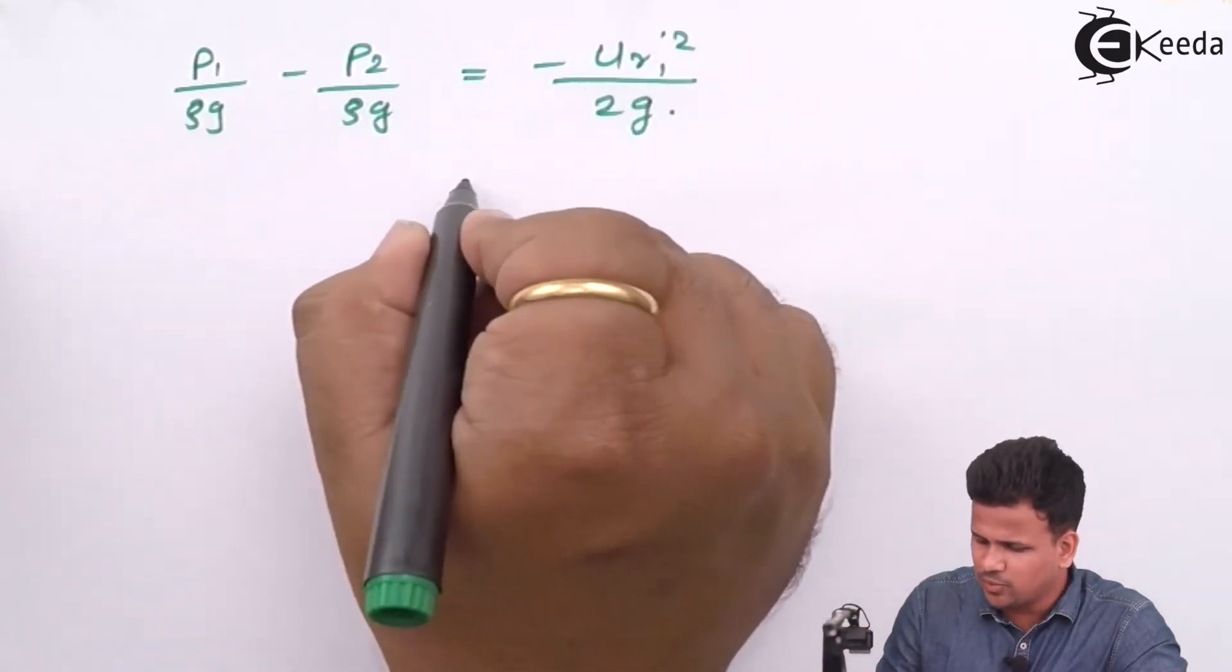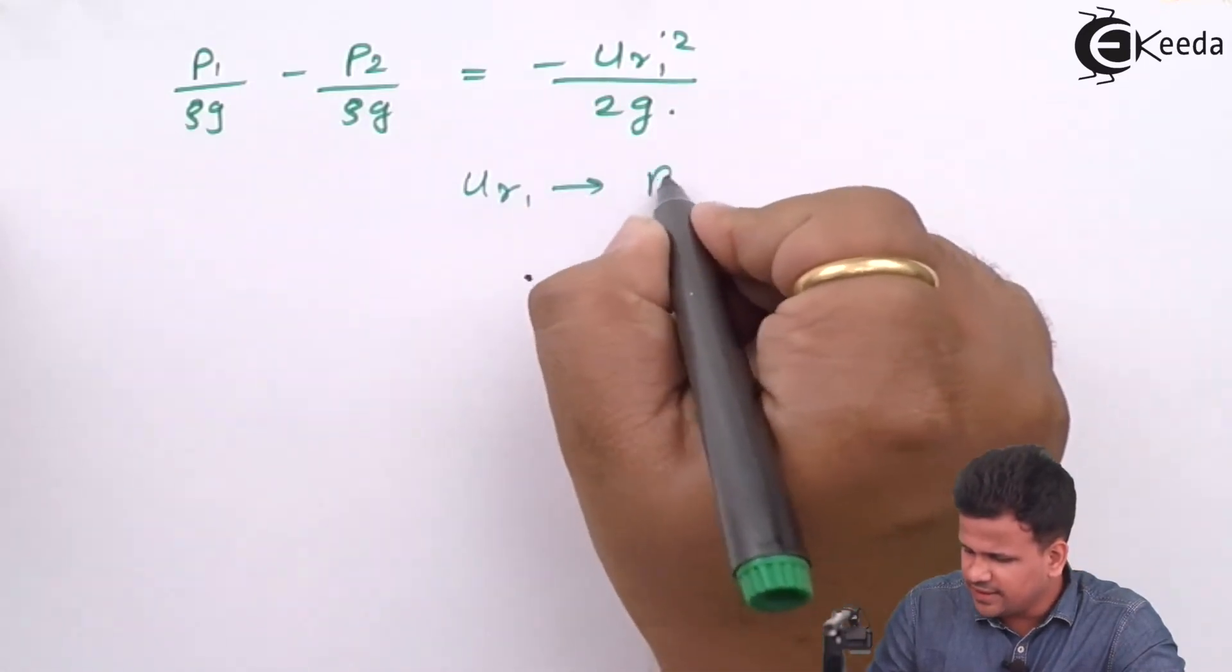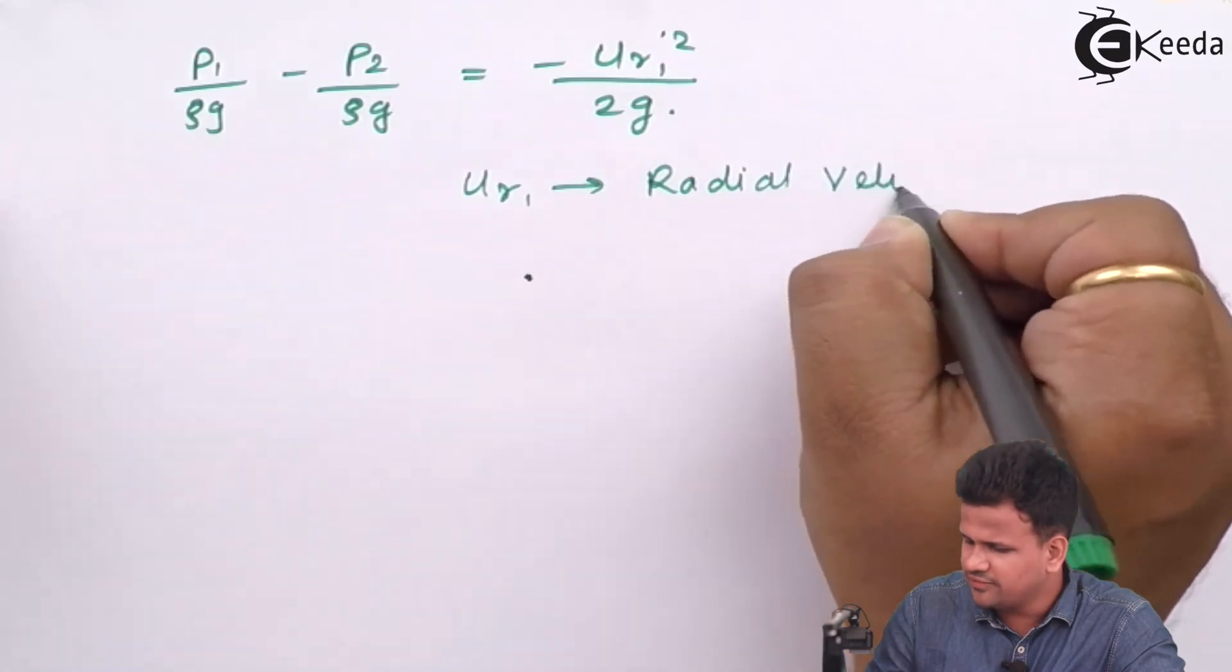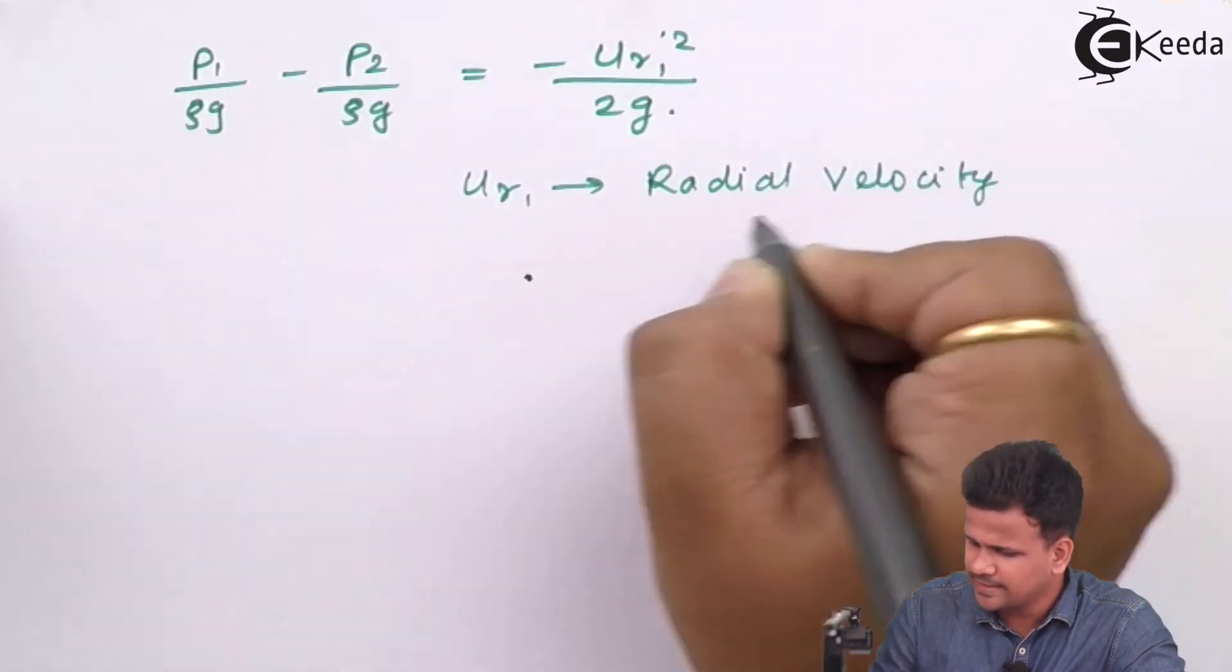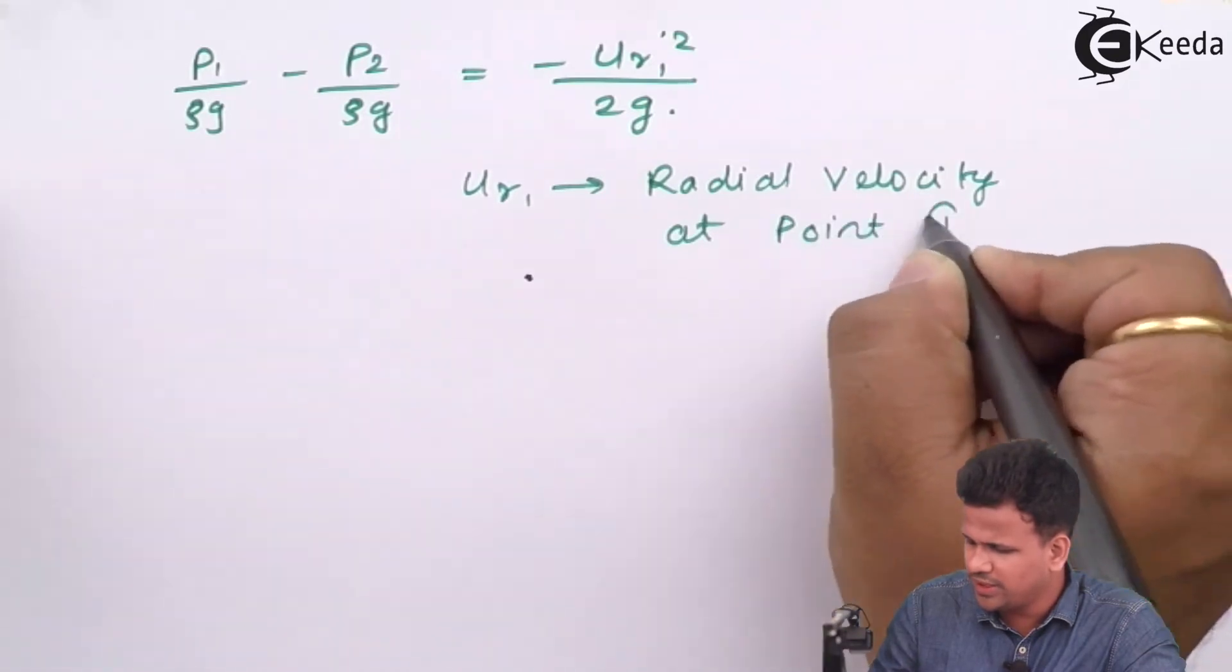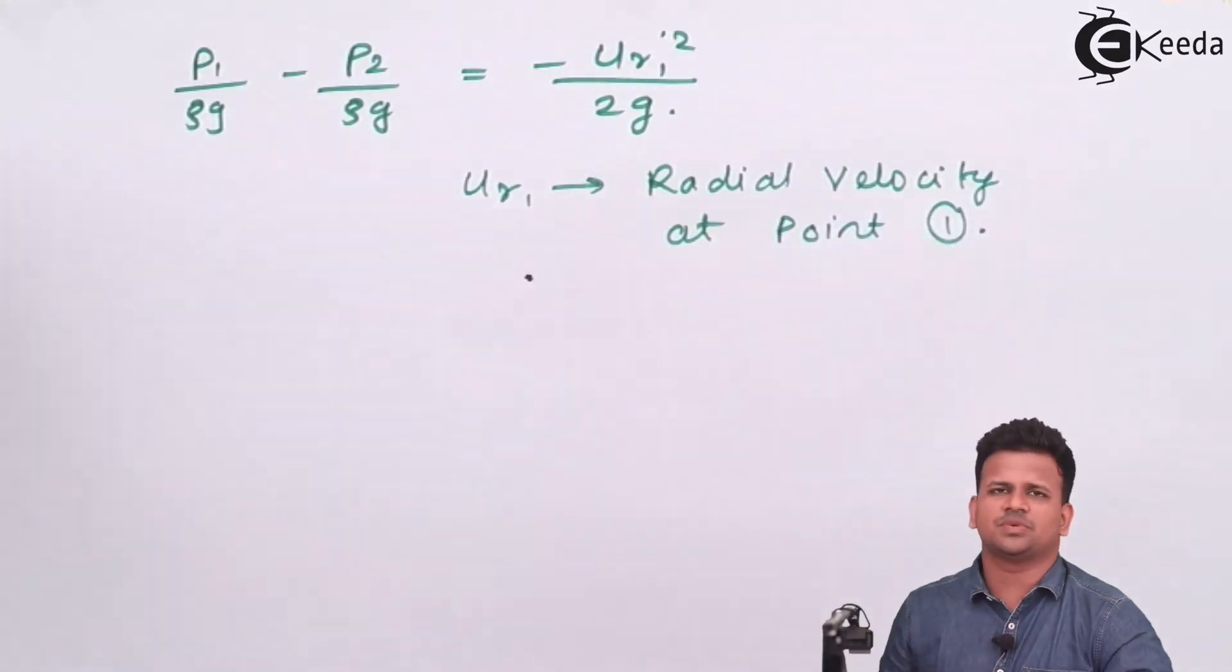Now what is ur1? ur1 is the radial component of velocity or radial velocity at point one, which will be maximum.